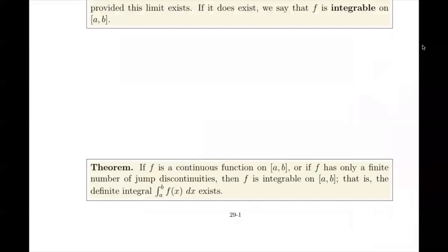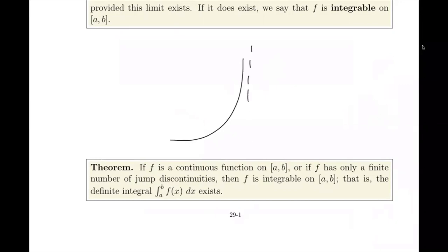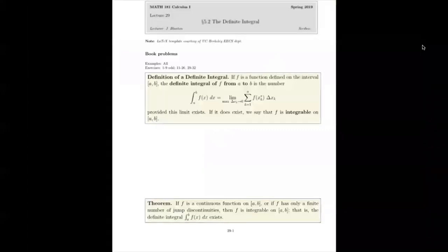If a function is continuous, then it's integrable. Even if it has jump discontinuities — meaning the jump distance is finite, not infinite like a vertical asymptote — it's still integrable. A function that looks like it jumps a finite distance is fine. Continuous functions are integrable; and remember that differentiable functions are continuous, so differentiable functions are integrable as well.